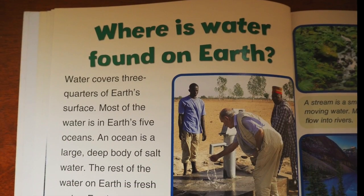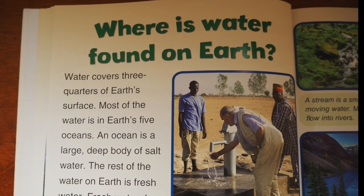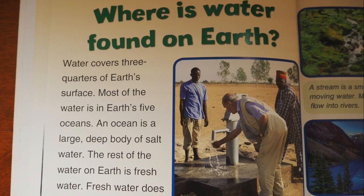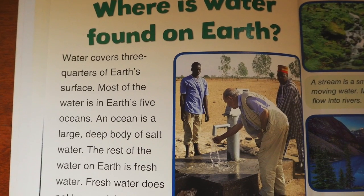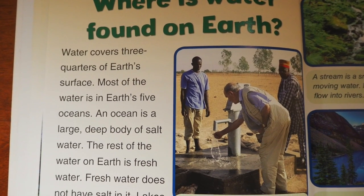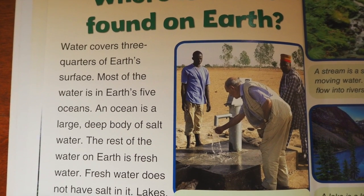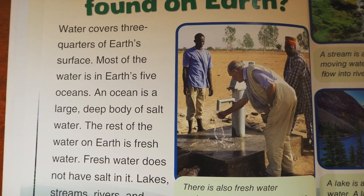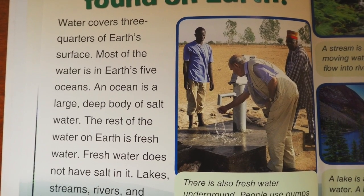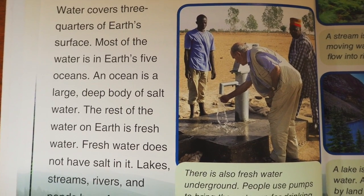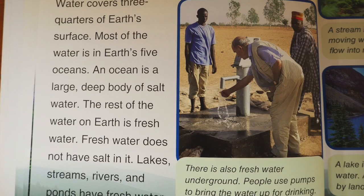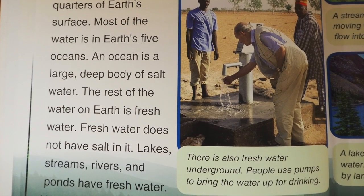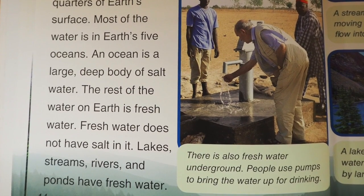Water covers three-quarters of Earth's surface. Most of the water is in Earth's five oceans. An ocean is a large, deep body of salt water. The rest of the water on Earth is freshwater, which does not have salt in it. Lakes, streams, rivers, and ponds have freshwater.